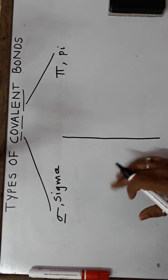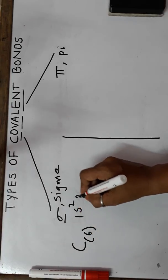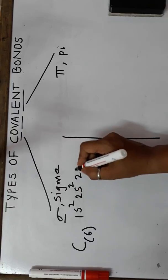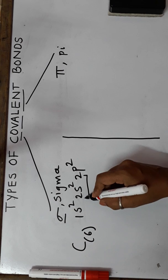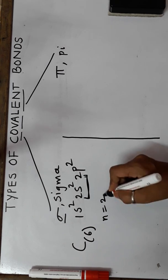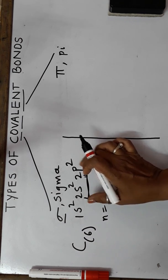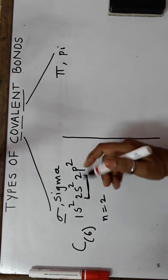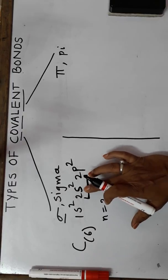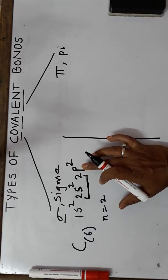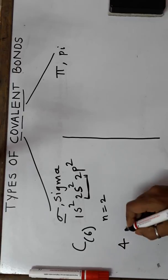Let's take the example of a simple atom like carbon. Atomic number is 6, its electronic configuration is 1s2 2s2 2p2. So the valence shell of carbon is number 2, so n = 2. If carbon has to make bonds with itself or with any other atom, it will have to use its valence orbitals to make bonds. The valence orbitals here are the s orbital and the p orbital, so carbon can make four bonds at the most.